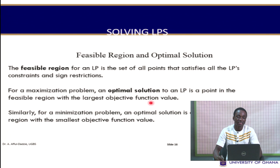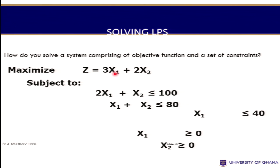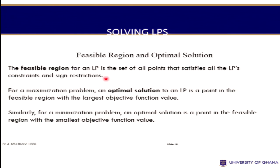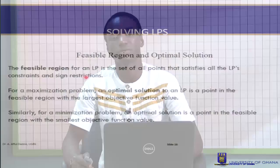For a maximization problem, an optimal solution is a feasible point with the largest objective function value. If we put the values of X1 and X2 into the objective function, the largest value of Z is our optimal solution. For a minimization problem, the smallest value of Z from the feasible points is the optimal solution. Our goal is to find feasible solutions and pick the optimal one that maximizes profit or minimizes cost.